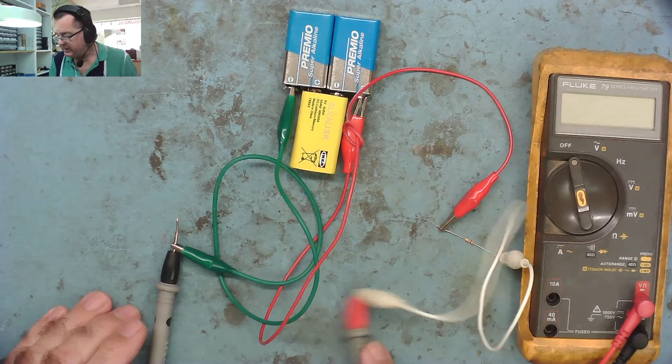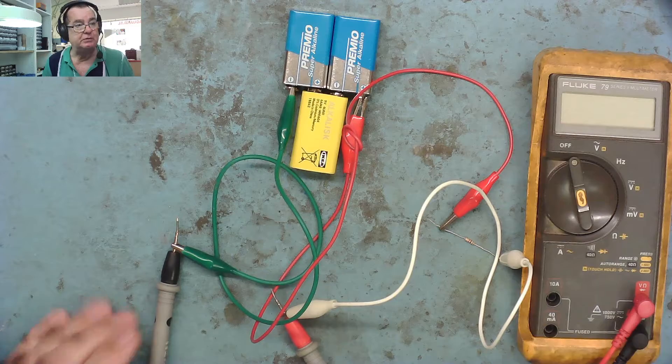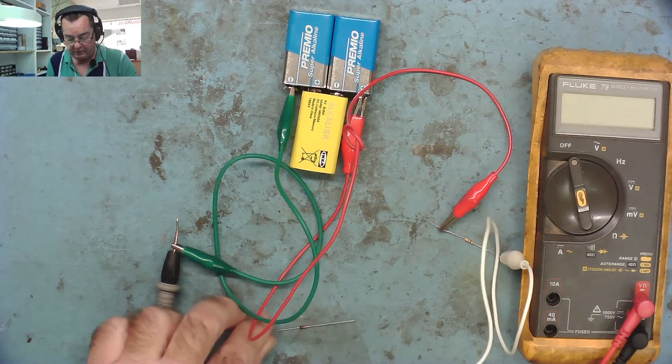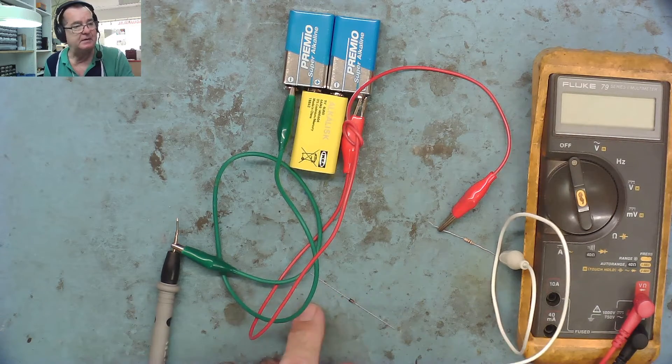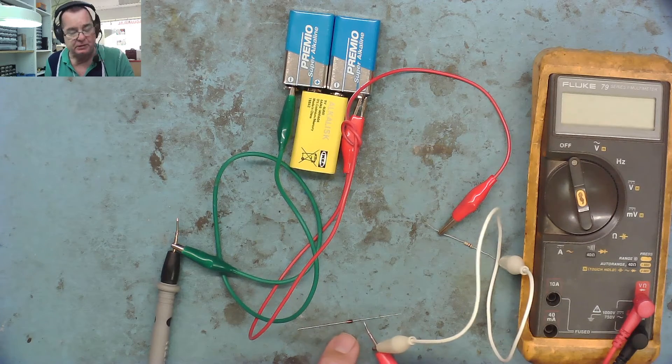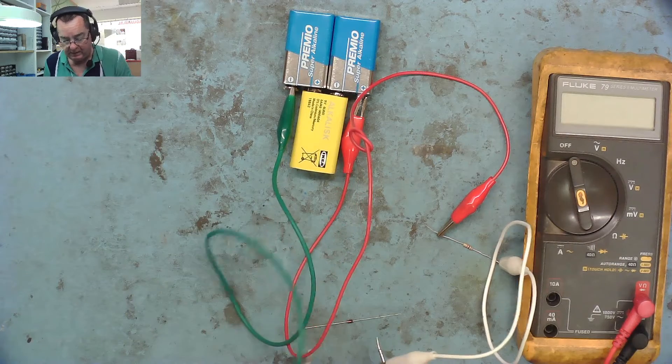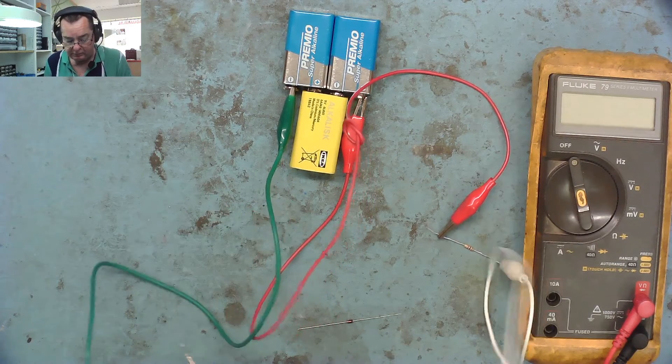We'll test a Zener diode. This will also tell you what voltage they are if they're not marked and you're not sure. The way we connect a Zener diode to test is the cathode - the end with the stripe - goes to the positive lead. We'll just take our test leads.